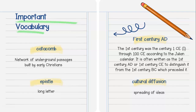Vocabulary is key to understanding. Catacomb is a network of underground passages built by early Christians. An epistle is a long letter. First century A.D. is that time period which is basically 1 C.E. — common era, or A.D. — through 100 C.E., common era.